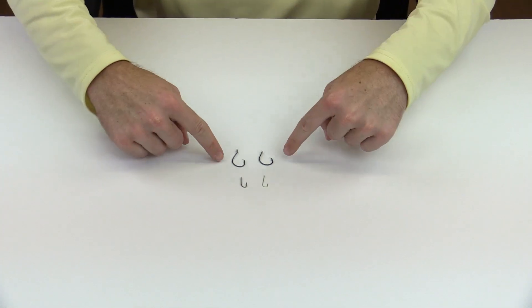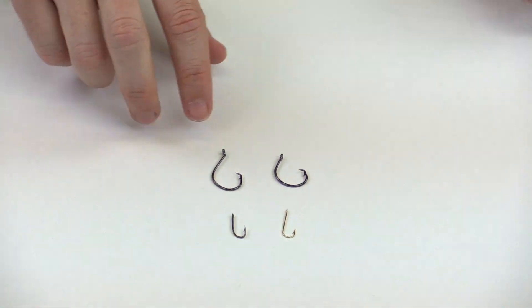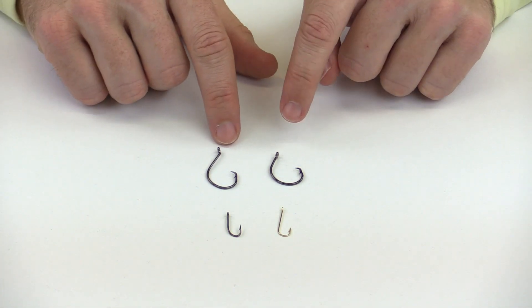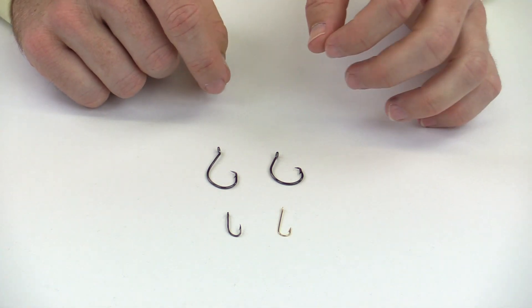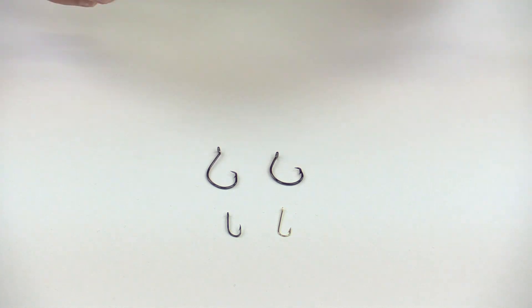So here are the two different types of hooks. These both are circle hooks. These are J hooks. You can see there's a large size difference. These are two-ought size, both of them. The trouble with hooks is that there's not a requirement, so different brands, different vendors have their two-oughts slightly different size.